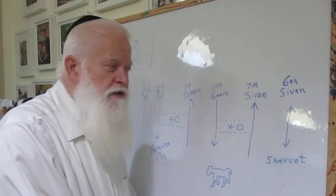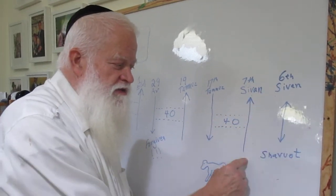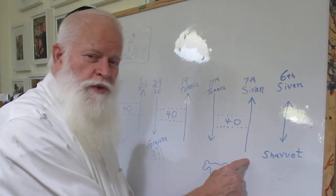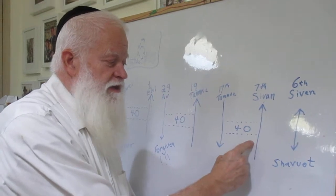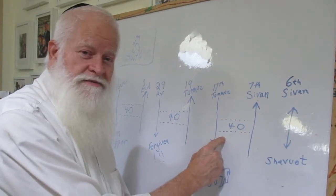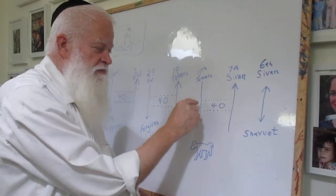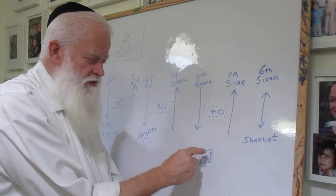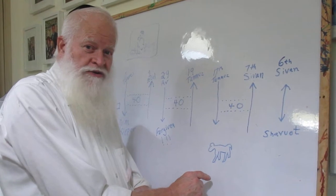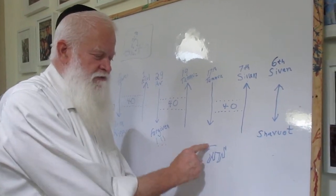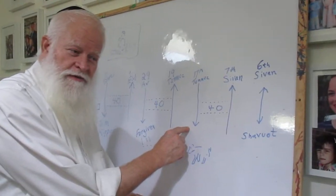The next day, Moshe went up onto the mountain on the seventh of Sivan and stayed there forty days. Then Hashem gave him the Torah and he came down with it. But he saw that the people were dancing with a golden calf, so Moshe threw the Luchos, the Torah, and broke them.